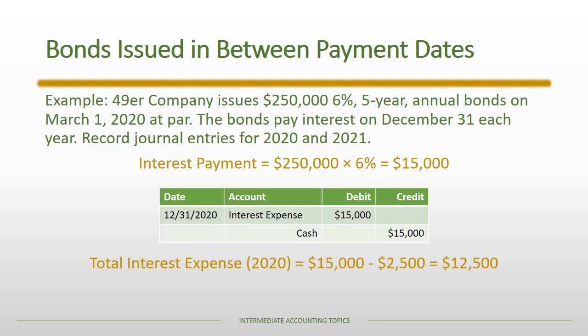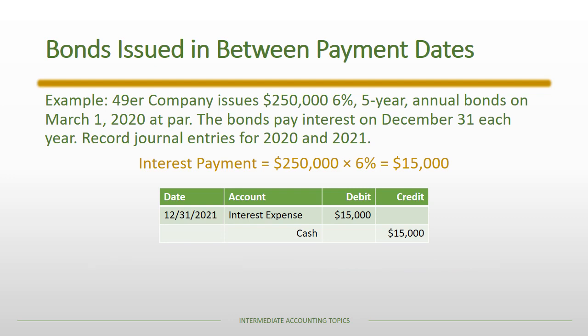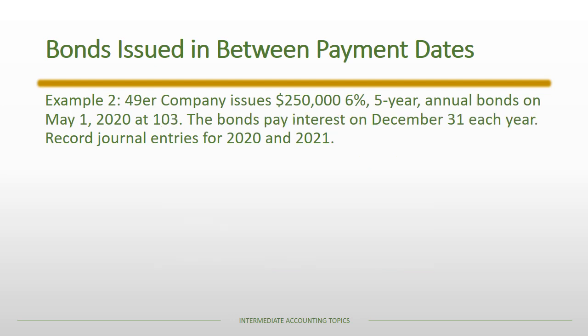However, the total interest expense in 2020 would only be $12,500, because we had that initial credit to interest expense at the time of issuance. In the subsequent year there'd be no offsetting entry — we just have that same straight-line approach — and so the total interest expense in 2021 would be the full $15,000.